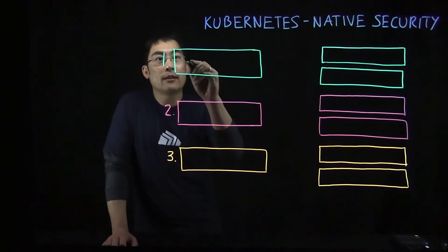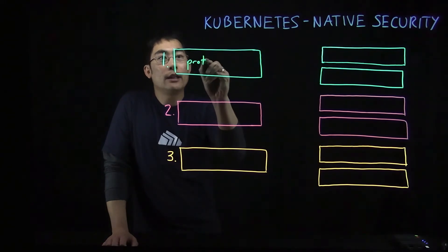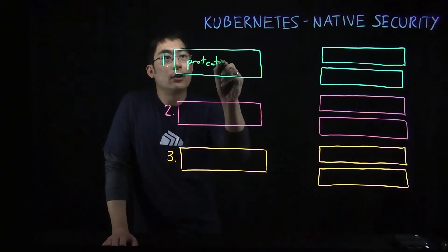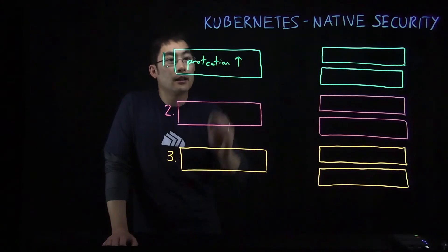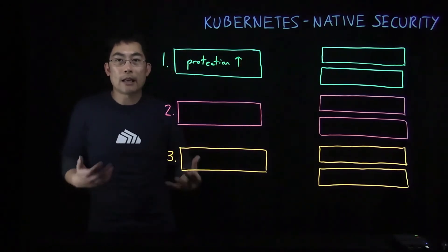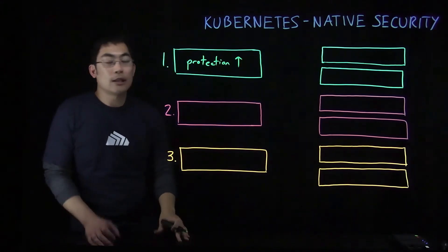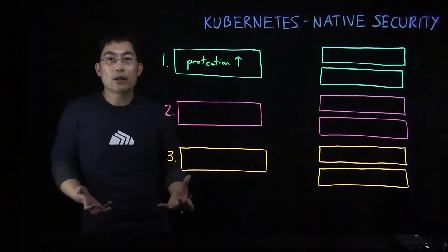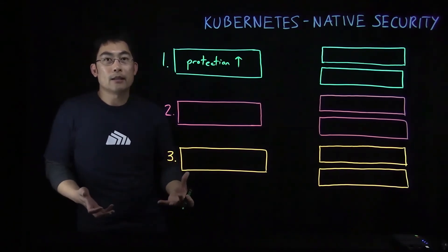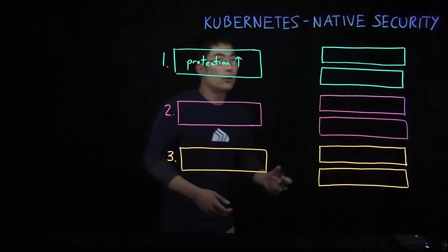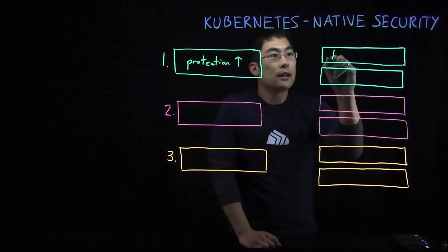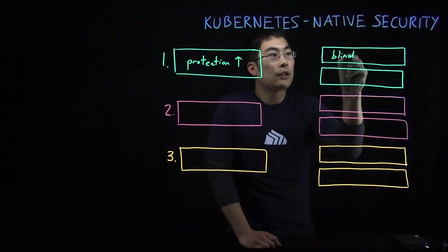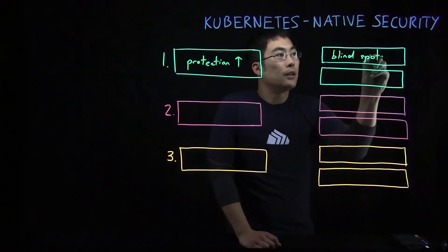I'm now going to cover the three key benefits that Kubernetes native security enables. First, with Kubernetes native security, you gain increased overall protection for your Kubernetes environments. Kubernetes native security is the only approach that gives you comprehensive visibility into Kubernetes specific configurations, compliance with best practices, and isolation between your workloads. With Kubernetes native security, you're actually able to eliminate blind spots.